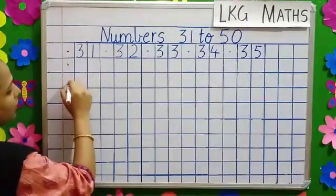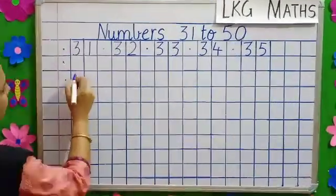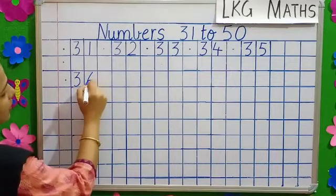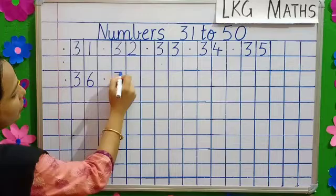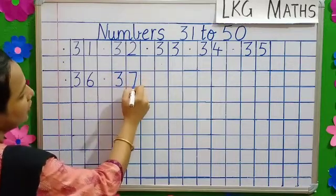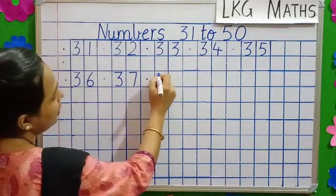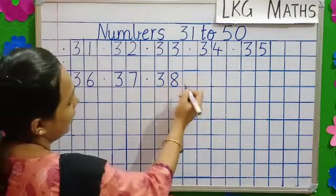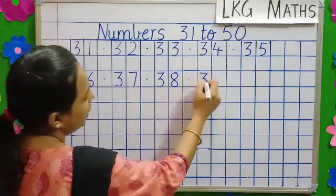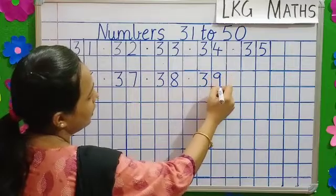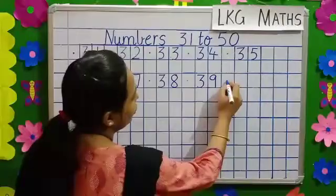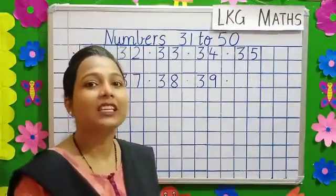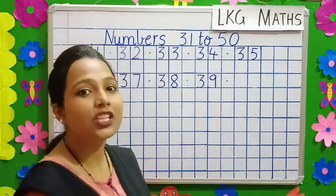Put another dot and start writing beside it. 3, 6, 36. Dot 3, 7, 37. Dot 3, 8, 38. Dot 3, 9, 39. Dot. So what comes after 39 children? Yes. 4, 0, 40.